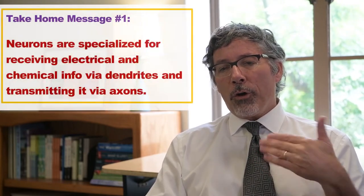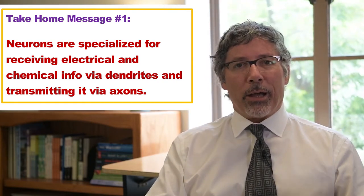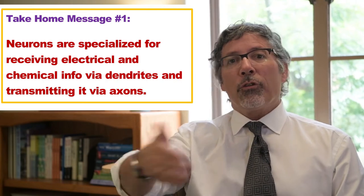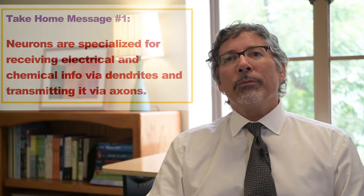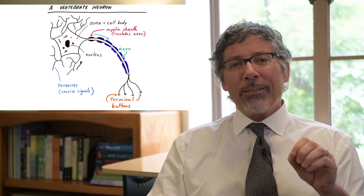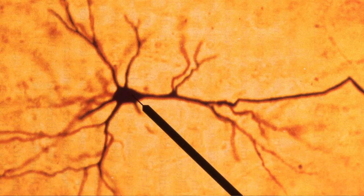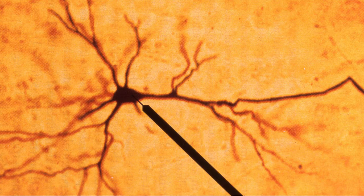All neurons are specialized so that they can receive electrical and chemical information in their dendrites and then transmit it to other tissue via axons. We know a lot about how these signals are transmitted because you can take glass-tipped electrodes and insert them into a cell without killing it. You can detect the charge inside the cell relative to outside, and we see that an electrical signal gets transmitted down the cell.